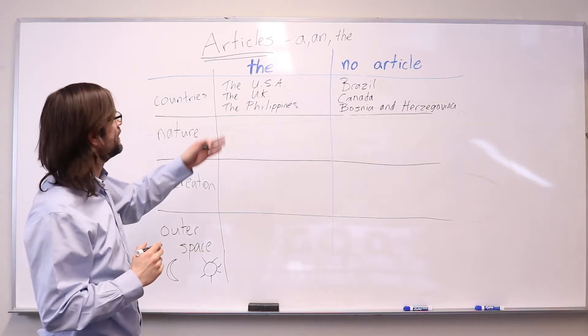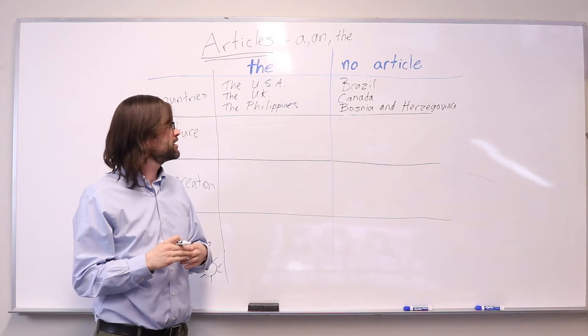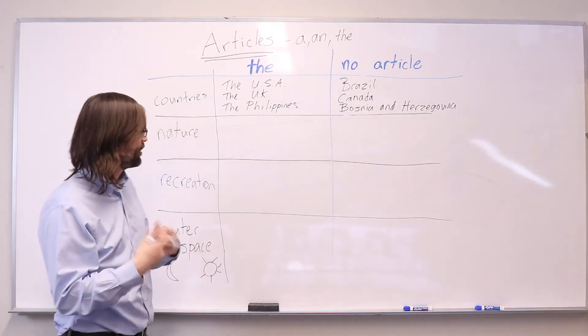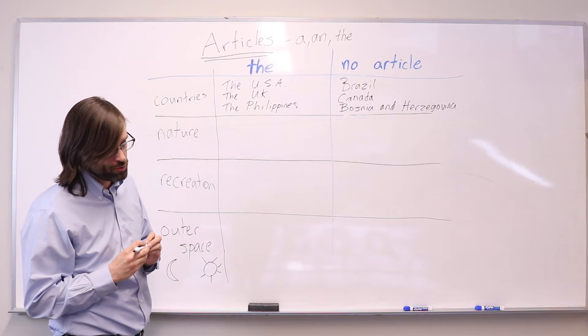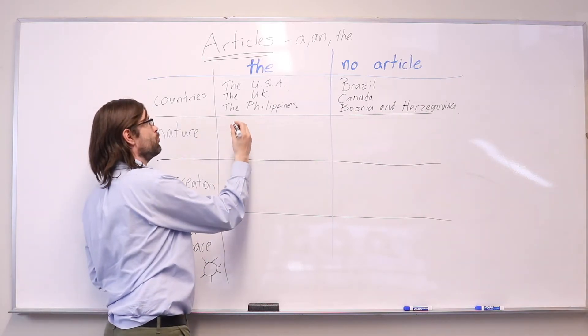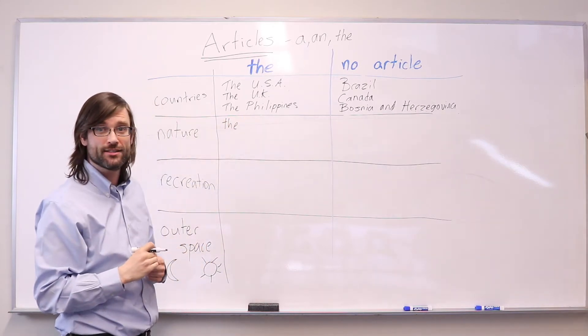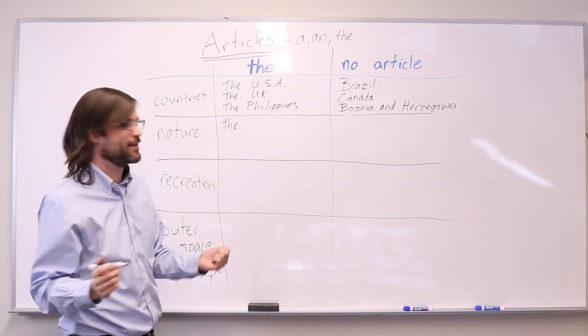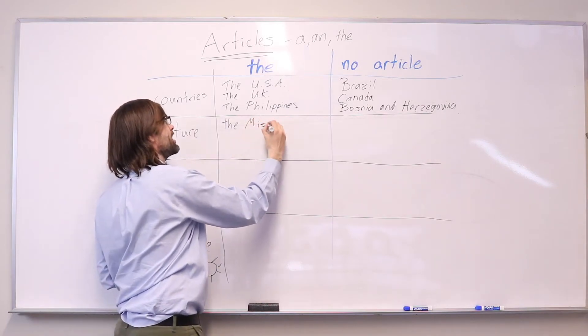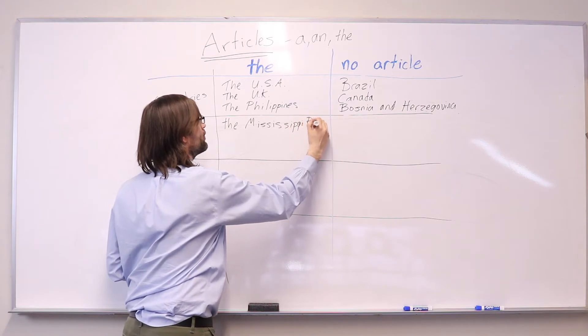When we talk about nature, there are some differences that don't make a lot of sense, but it's important to remember them if you want to use correct English and sound natural. For example, we use the with certain bodies of water, like rivers. The largest river in the United States. Do you know? Yes, that's correct. The Mississippi. M-I-S-S-I-S-S-I-P-P-I River.